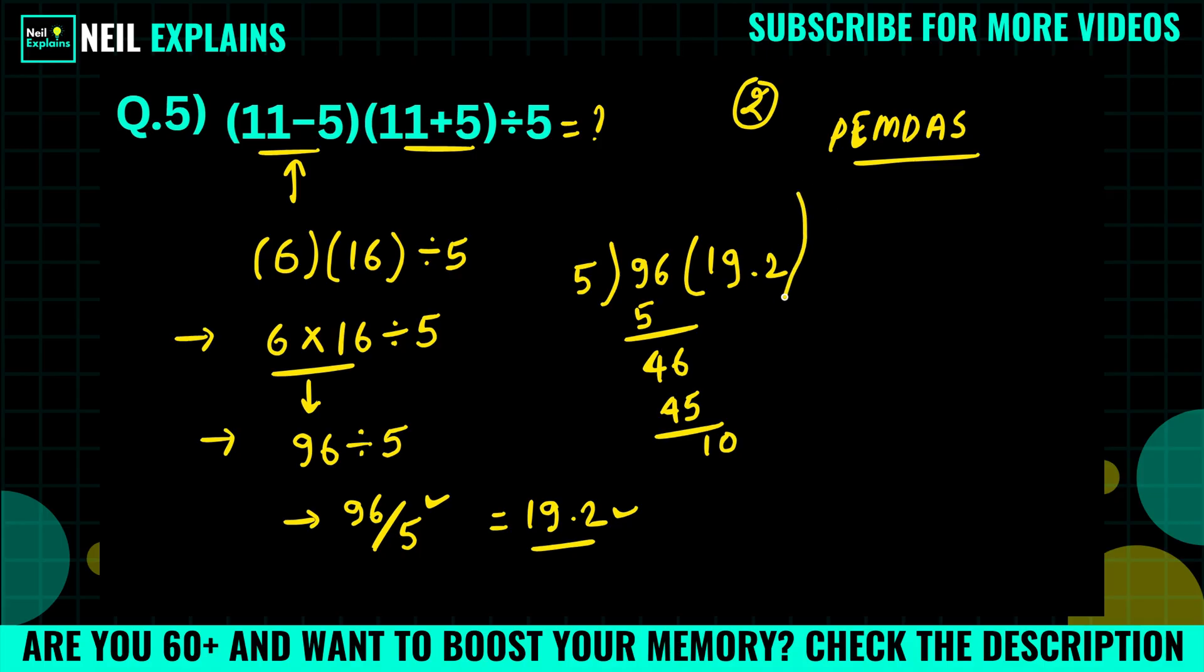And method 2, we have to use algebra using this one: a plus b into a minus b, which equals to a squared minus b squared. But you don't need it here. I just want to inform you that we can solve like this. So this 11 minus 5 and 11 plus 5 will become 11 squared minus 5 squared divided by 5.